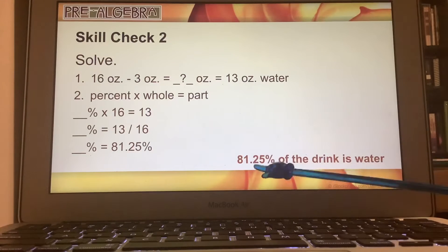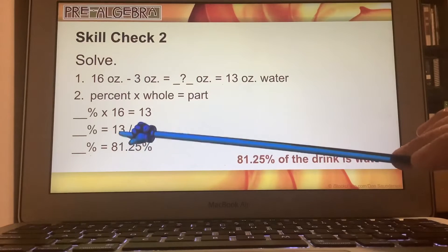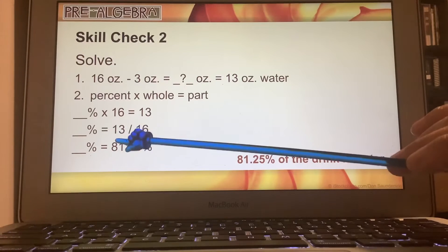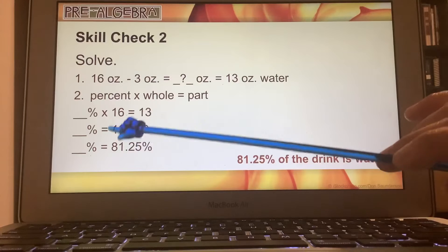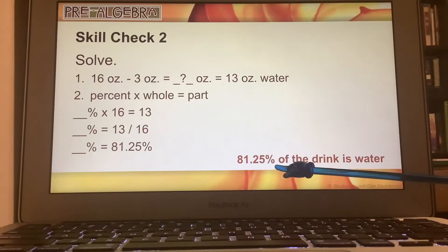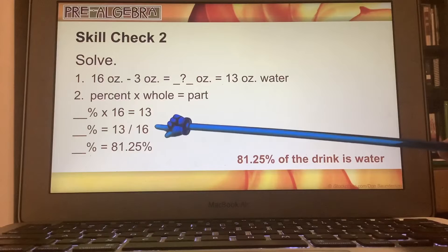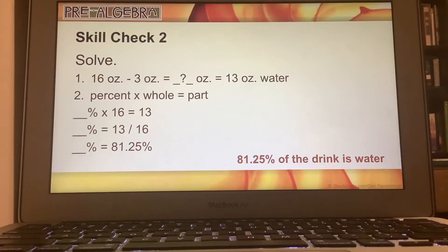we end up with 81.25% of the drink is water. So that means 13 ounces, which is the water, is 81.25% of the 16 ounces of the drink.